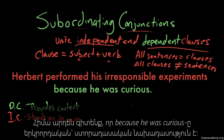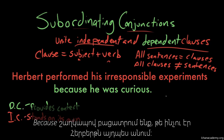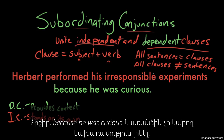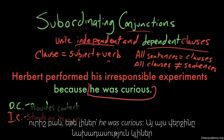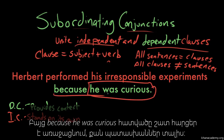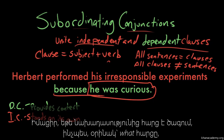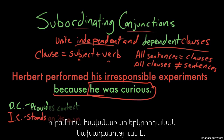Now, we know that because he was curious is the dependent clause, because it explains more of why Herbert did what he did — it is explaining the reason for his performing irresponsible experiments. But because he was curious on its own doesn't work as a sentence. He was curious does — that's a sentence. But because he was curious asks more questions than it answers: because he was curious, what? If a clause causes you to ask yeah, so what? then it's probably a dependent clause.